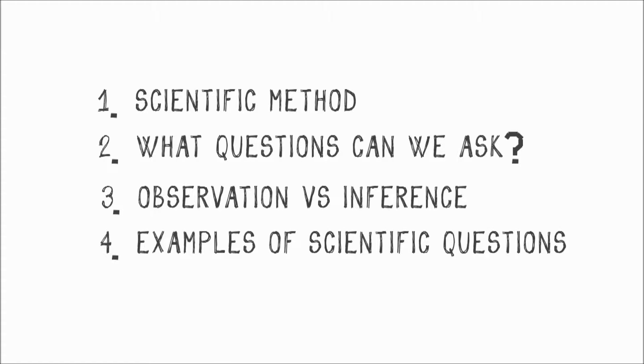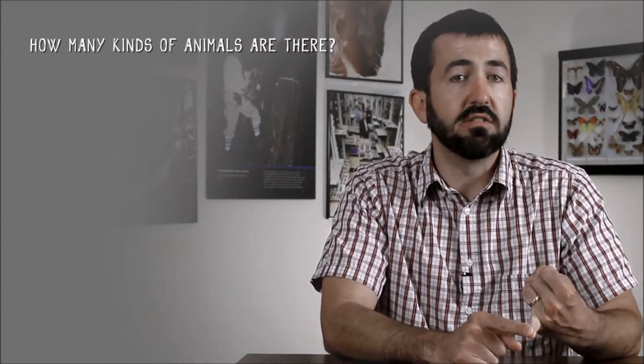To help you use the eMammal curriculum in your classroom, the eMammal team wanted to give you examples of specific questions that scientists ask using camera trap data. There are two main kinds of questions we can ask: one is just using the camera trap data, and the second kind uses camera trap data combined with other information like habitat. From just the camera trap data, one thing we ask a lot is how many different kinds of animals are in an area — the diversity.